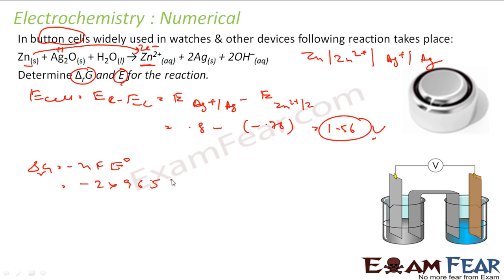F is 96487 coulomb per mole times 1.56 volt, that is joule per coulomb. Cancel, you solve this you get minus 301080 joule per mole, which is minus 3.01 × 10⁵ joule per mole, and that is my answer.